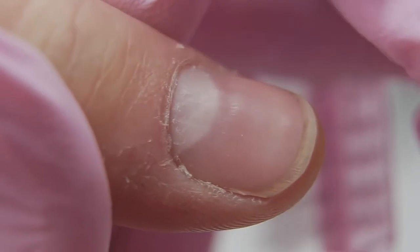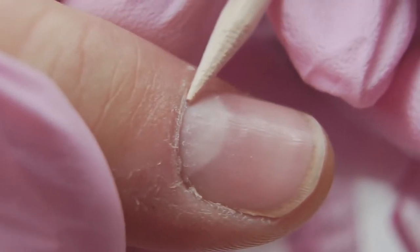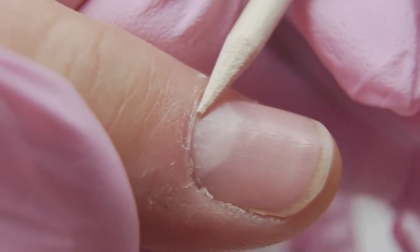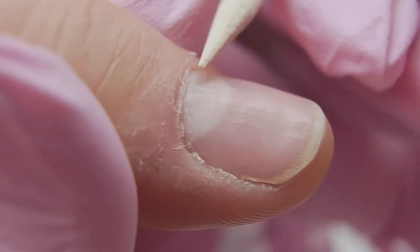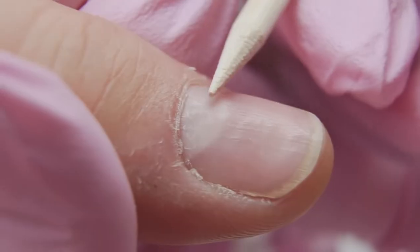On the thumb we have a wide lunula, which means that there is no deep pocket under the cuticle. And the nail is very soft and spongy in the root zone, so I need to be extremely careful.